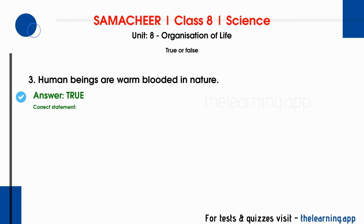Cold-blooded animals cannot regulate their body temperature under extreme temperature conditions. Examples of cold-blooded animals include reptiles, insects, and fish. Since human beings are mammals, we are warm-blooded in nature — this statement is true.